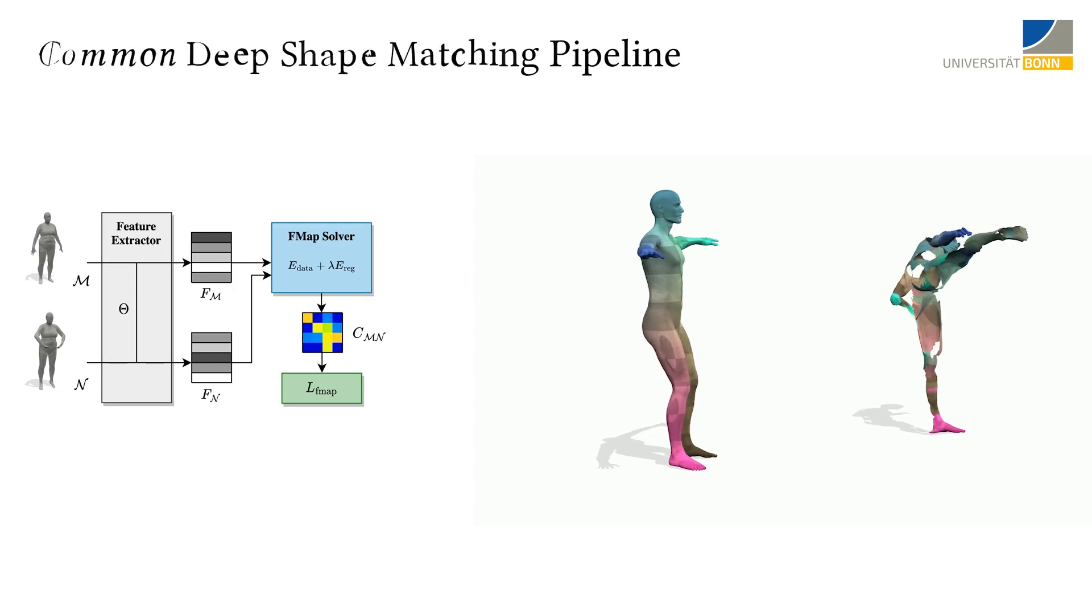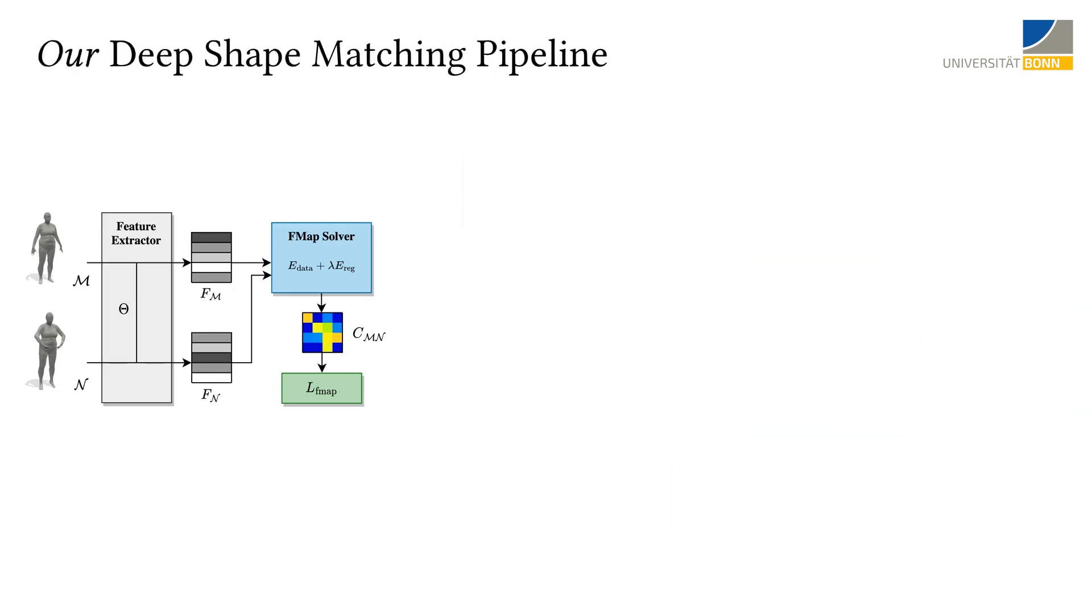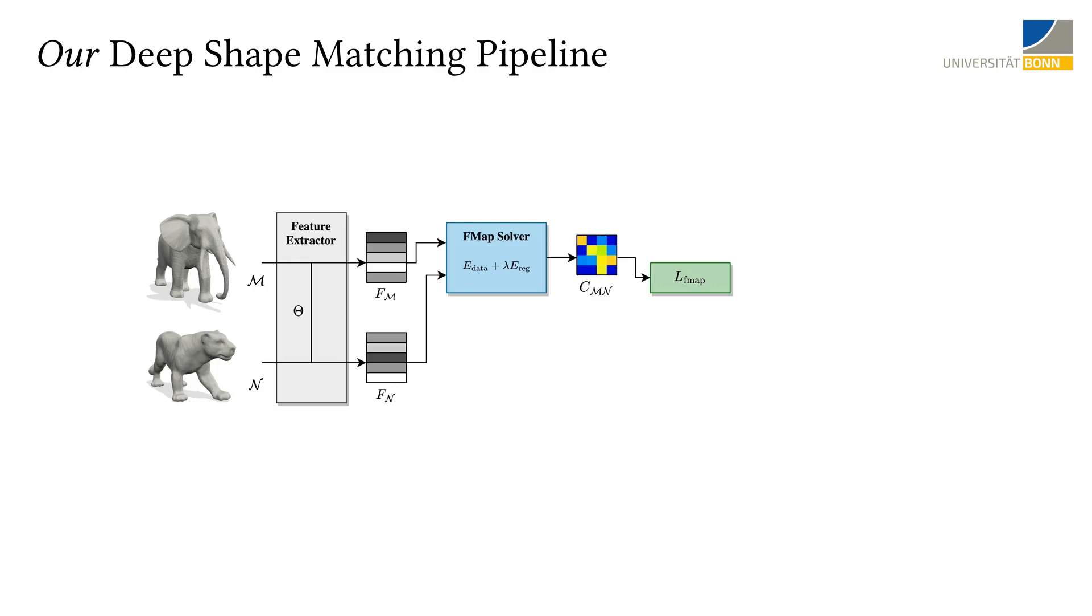We overcome the limitation of such challenging scenarios by explicitly considering the relationship between functional map and point map. To this end, we keep the components of the common deep shape matching pipeline and add an additional point map computation module. Herein, point maps are computed upon feature similarity. The computed soft point map can be converted to a functional map by using eigenfunctions of Laplacian matrices of shapes M and N.